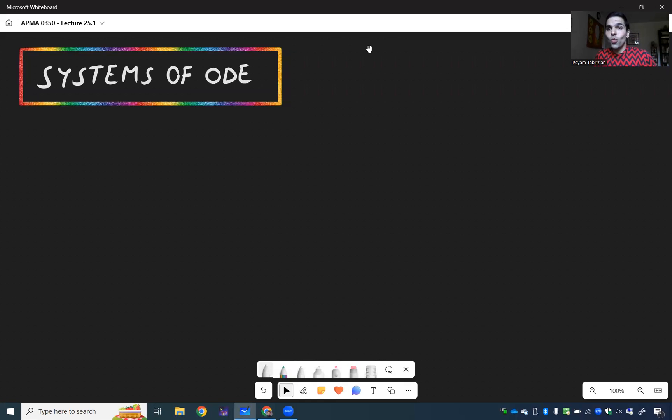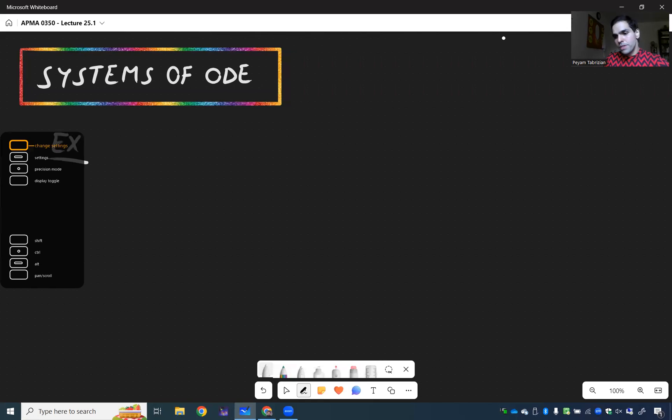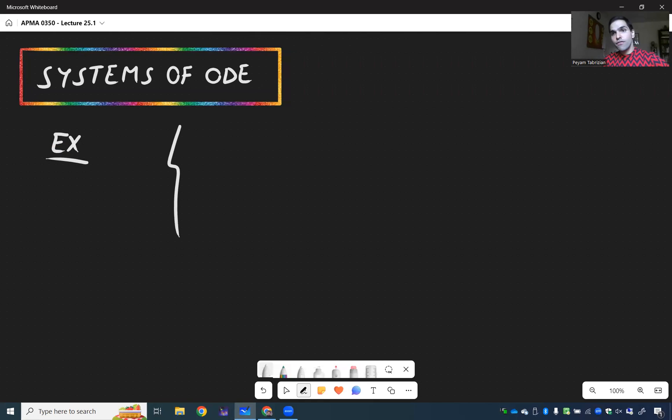Welcome to the magical world of systems of ODEs. Those are equations that depend not only on themselves, but also on each other. An example would be, for instance, you have two functions, x1 and x2,